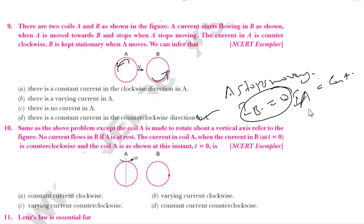If current in A were variable, there would be an induced EMF in the circuit. So B would not be zero. If A is moving, an induced current would form. So current in A must remain constant — and the answer is there is a constant current in the counterclockwise direction in A.